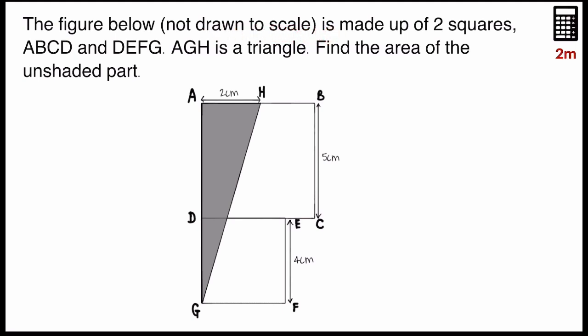The figure below, not drawn to scale, is made up of two squares, ABCD and DEFG. AGH is a triangle. Find the area of the unshaded part that's here.